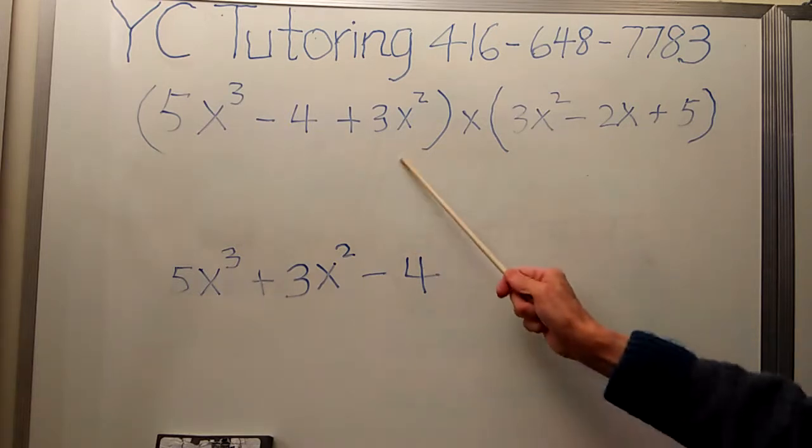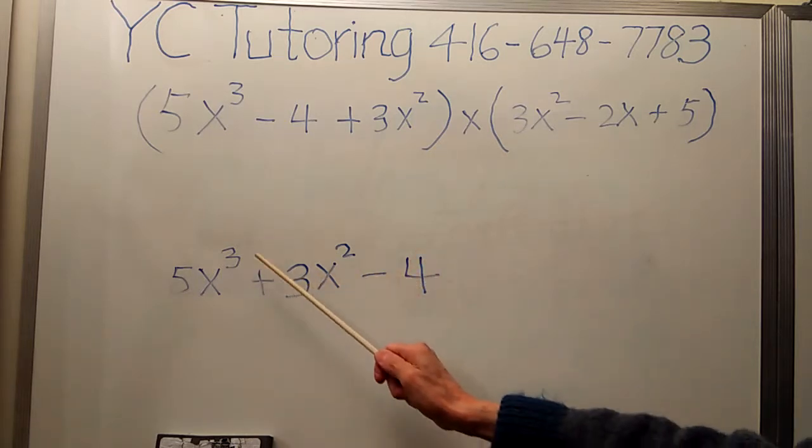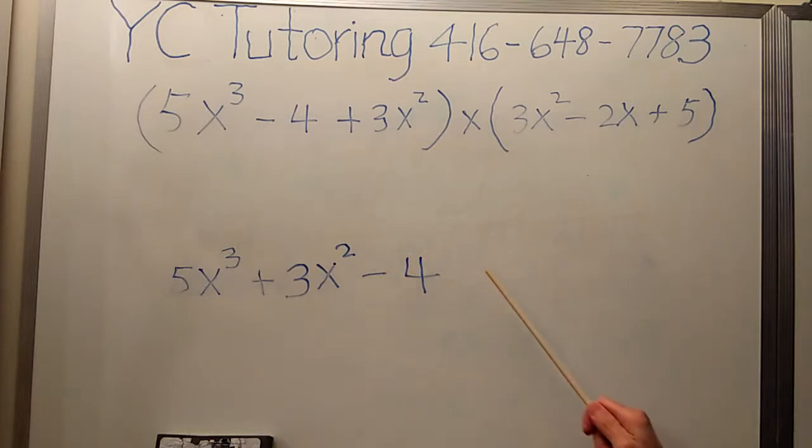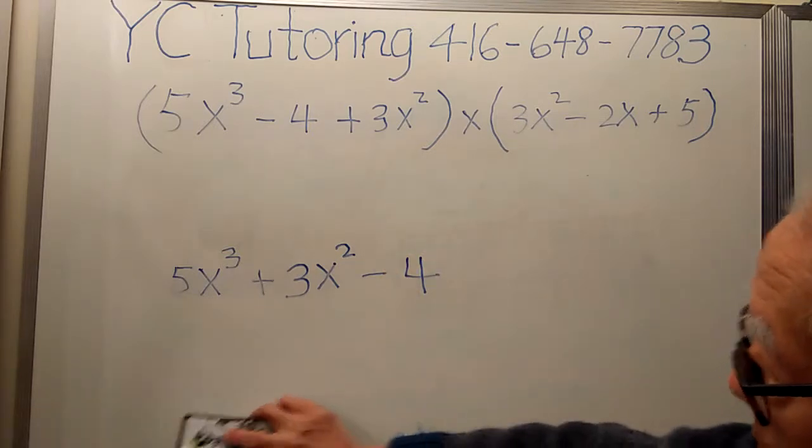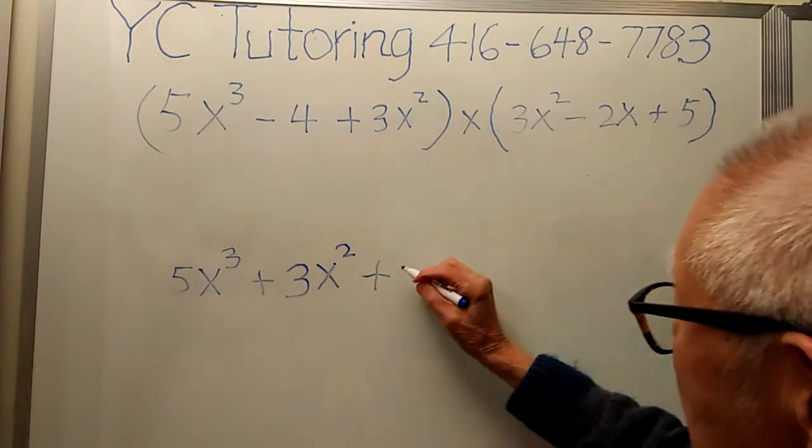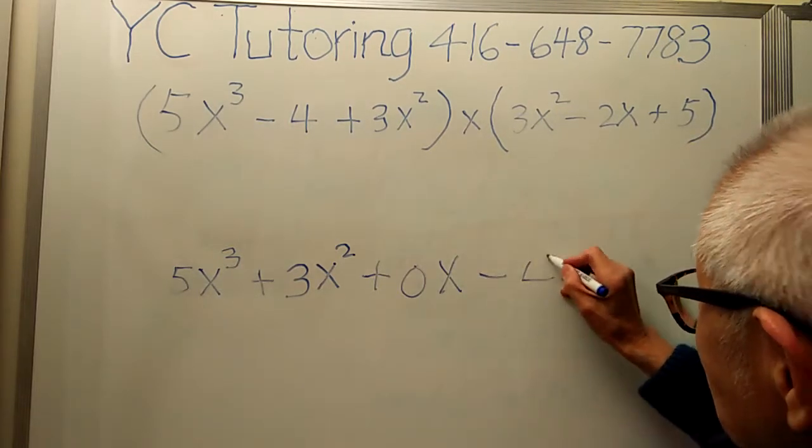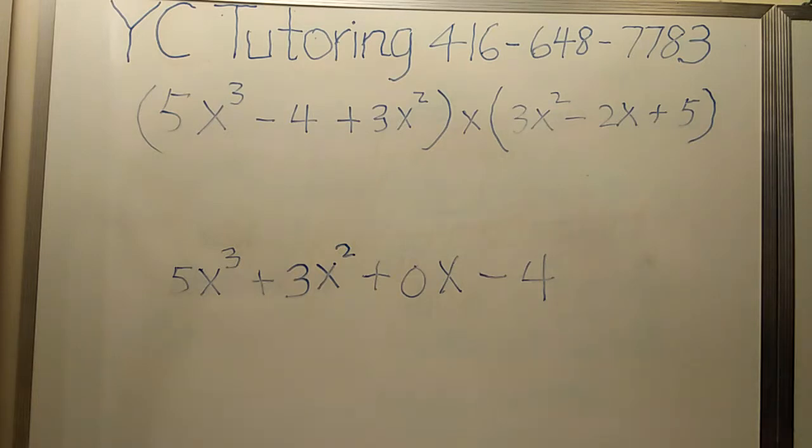However, before I do multiplication, I still need another term because I need 3, 2, and 1, and then constant. So what I write is plus 0 times x, and then minus 4. Now I'm okay. I have cube, square, and this is power 1, and constant. So I need this. Then I can do multiplication.